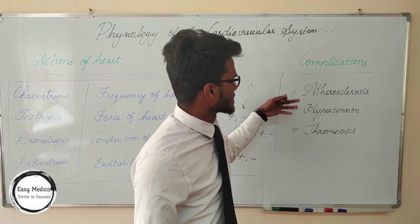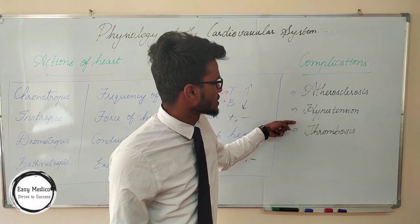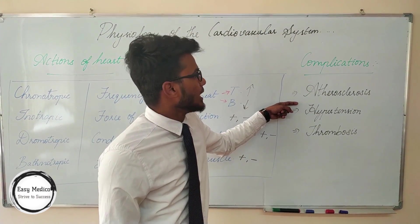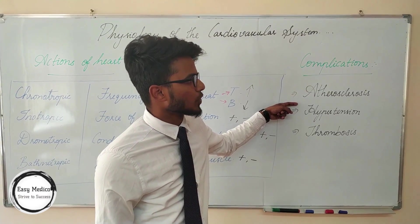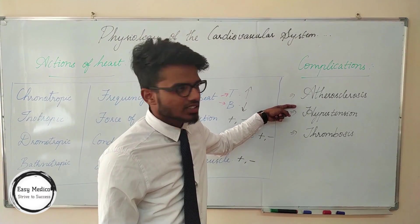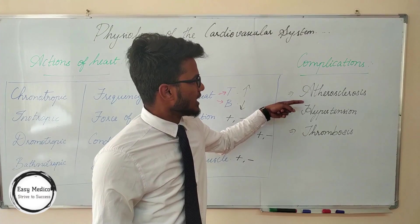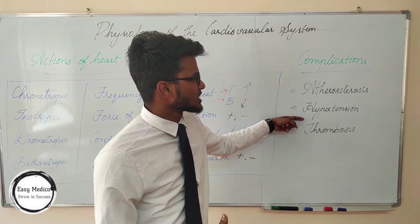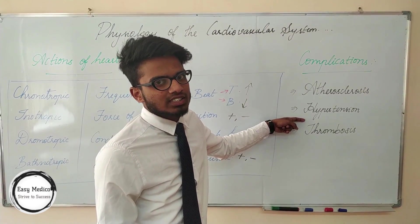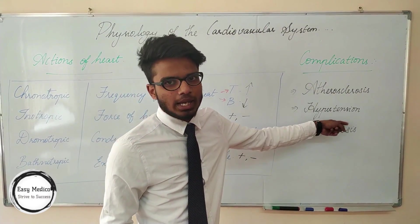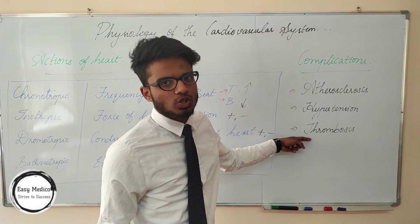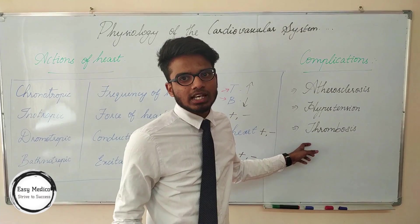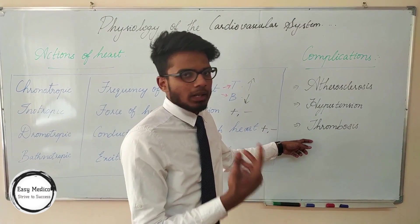There are three complications: atherosclerosis, hypertension, and thrombosis. Atherosclerosis is due to the narrowing of the lumen caused by the deposition of low-density lipoprotein on the blood vessels. Hypertension is due to vasoconstriction — the constriction of the vessels leads to hypertension. Thrombosis is due to the formation of a clot in the blood vessel, which obstructs blood flow.